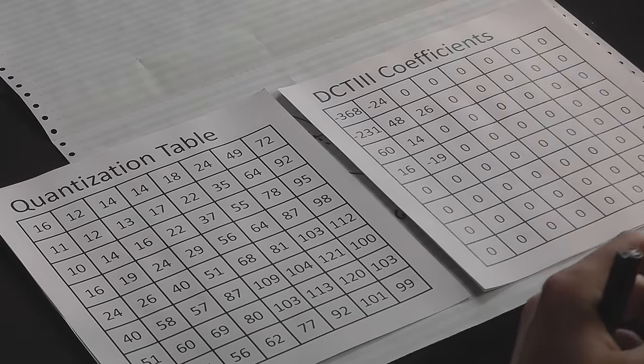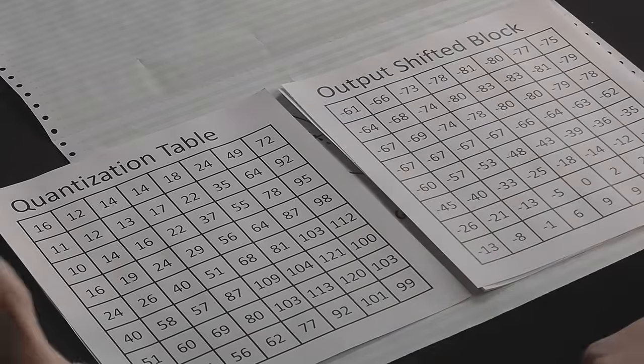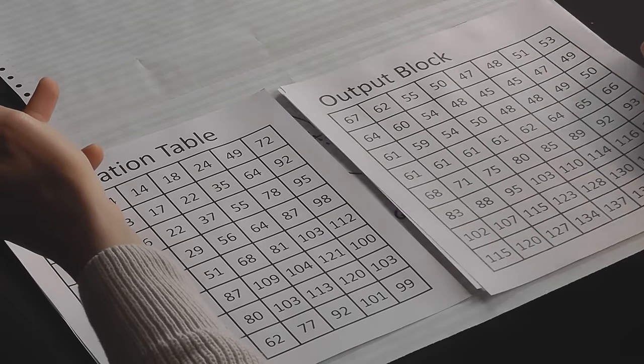Then in reverse, we use discrete cosine transform number three, which is usually just called the inverse discrete cosine transform, because it's generally used to inverse what we did for discrete cosine transform two. And that gives us our shifted block back again, which of course we then add 128 to every value, and we have our output block. And there it is.